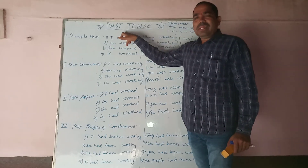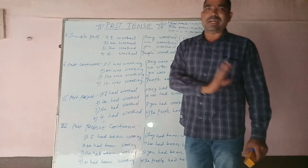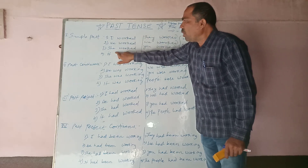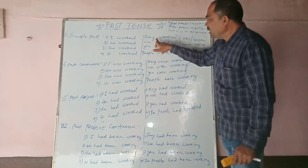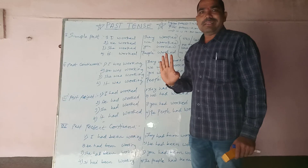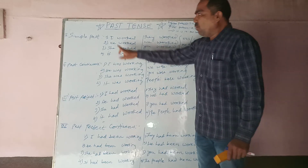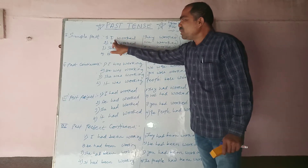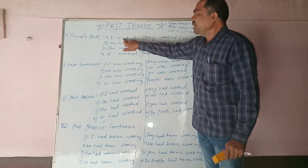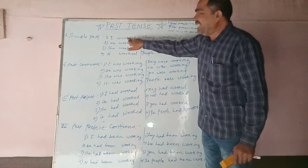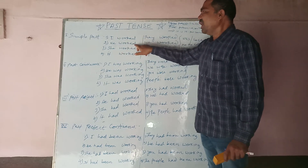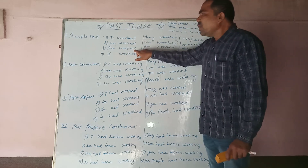Past tense means the action is supposed to have happened recently. In simple past, after using a singular pronoun, the main verb changes to V2 form. For example: I worked, he worked, she worked, it worked — these are all examples of simple past with singular pronouns.